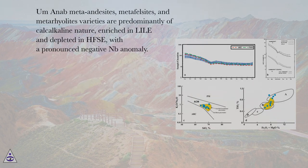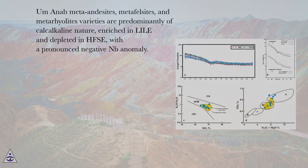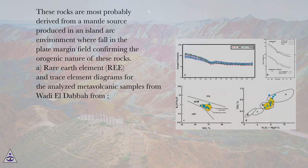Om-Onab meta-andesites, metafelsites, and metarhyolite varieties are predominantly of calc-alkaline nature, enriched in LILE and depleted in HFSE, with a pronounced negative Nb anomaly. These rocks are most probably derived from a mantle source produced in an island arc environment, falling in the plate margin field confirming the orogenic nature of these rocks.